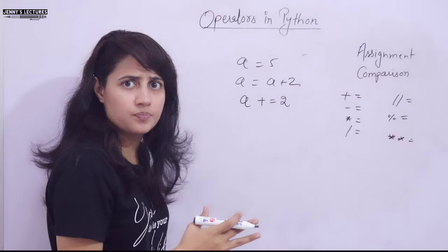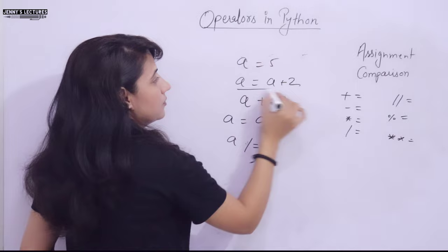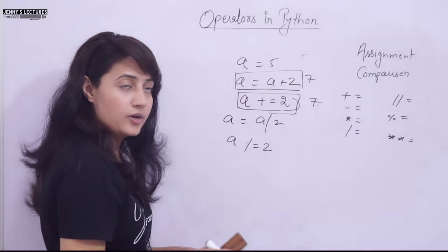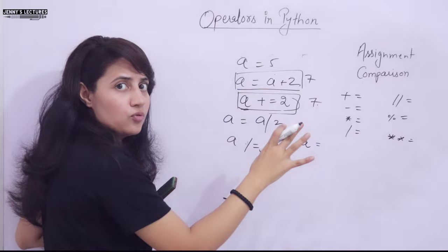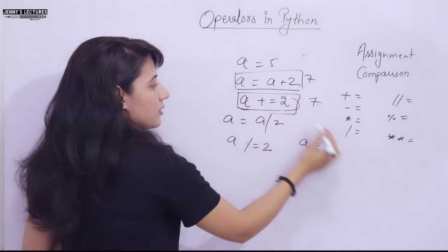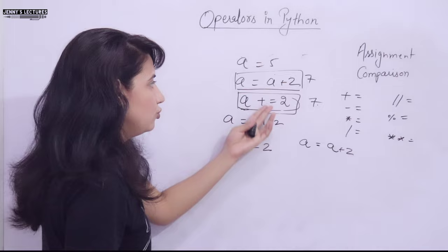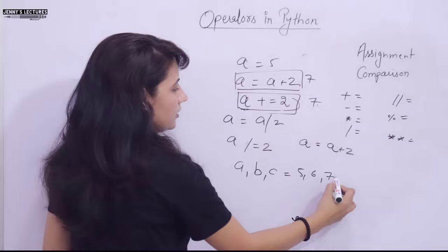We also have floor division equal to '//=', modulo equal to '%=', and power equal to '**='. These are all shorthand assignment operators. For example, instead of 'a = a / 2' we can write 'a /= 2'. You can also do more than one assignment in one line, like 'a, b, c = 5, 6, 7', and if you print a, b, c it will give you 5, 6, 7.